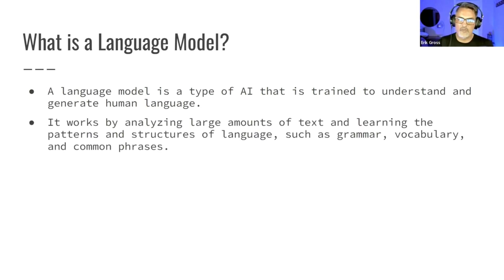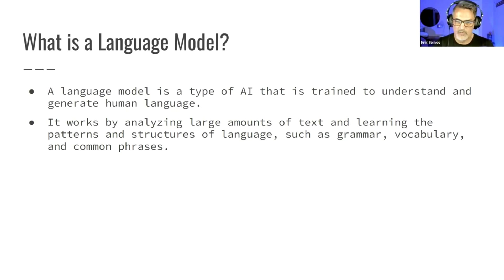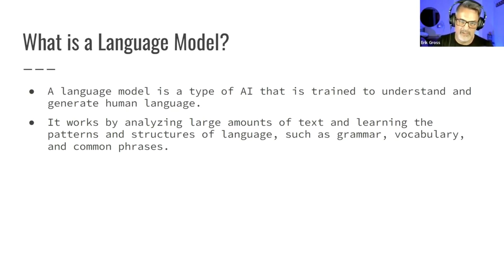The way this language model works is it will take in a tremendous amount of text, and because of the programming behind it, it will actually learn the patterns and structures of language — things like grammar, vocabulary, and common phrases. It's just taking the powerful tools of artificial intelligence and applying them to the area of written human language. That's what a language model is.